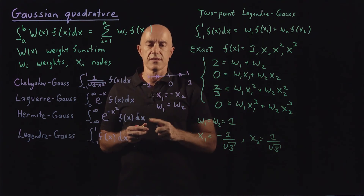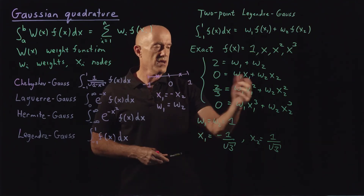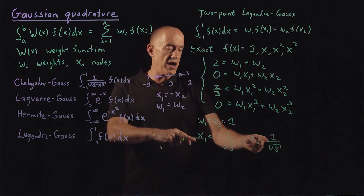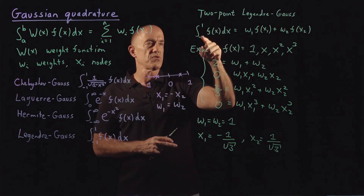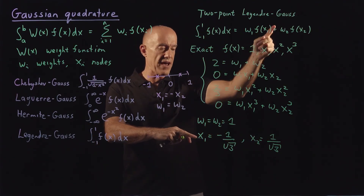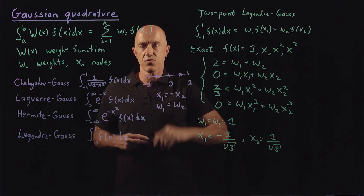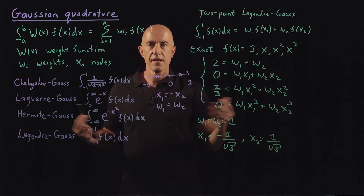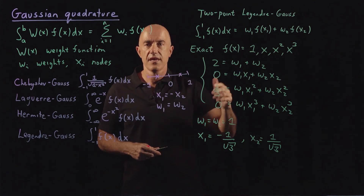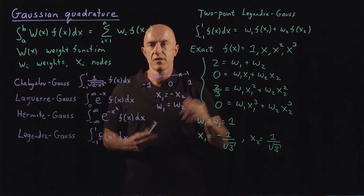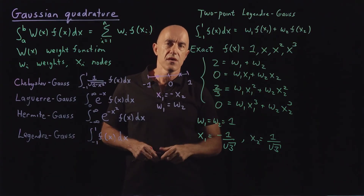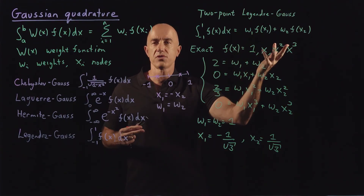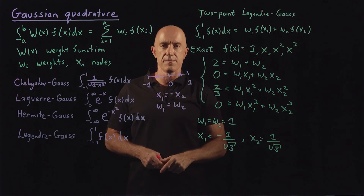Solving these equations using the symmetry trick gives us the two-point Legendre-Gauss quadrature formula: the integral from minus 1 to 1 of f(x) dx equals f evaluated at minus 1 over root 3, plus f evaluated at plus 1 over root 3. You can extend this to an n-point Legendre-Gauss quadrature — 7 points, 9 points, and so on. The weights and nodes are usually compiled in a table.